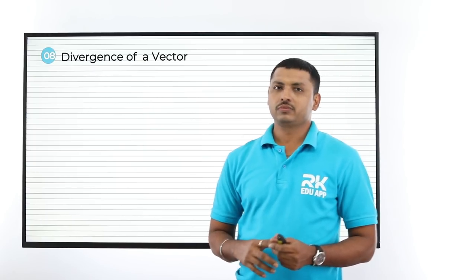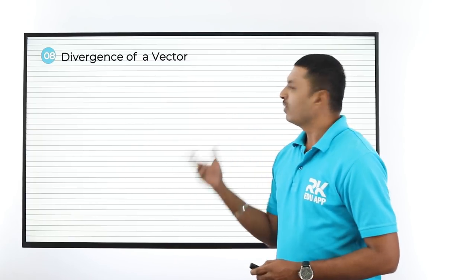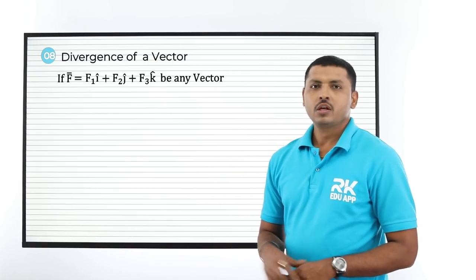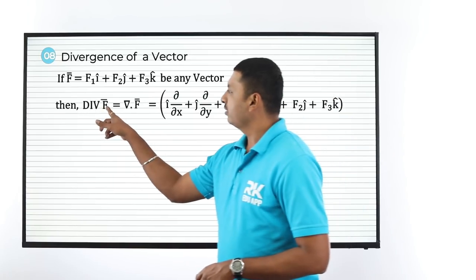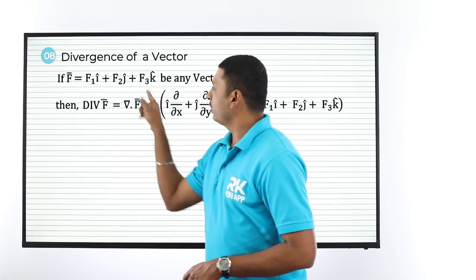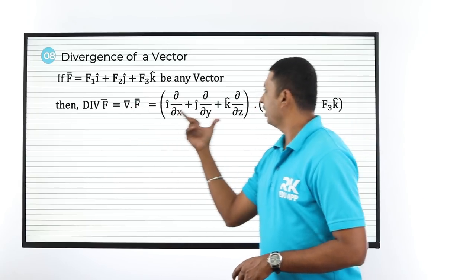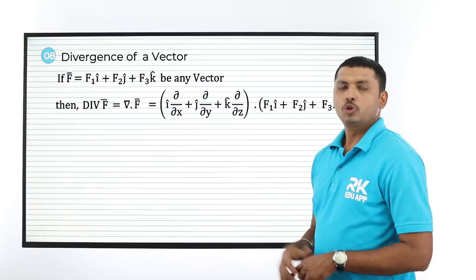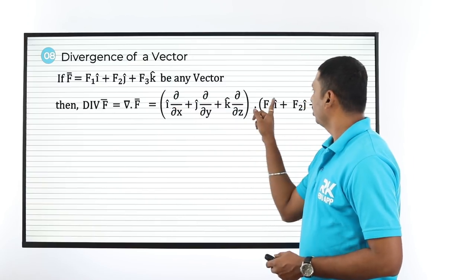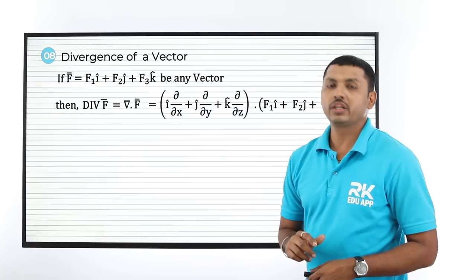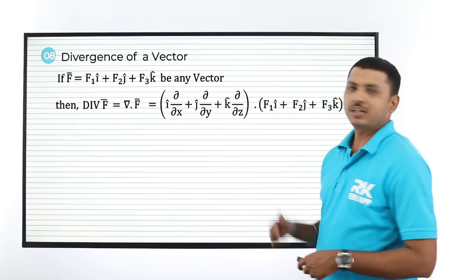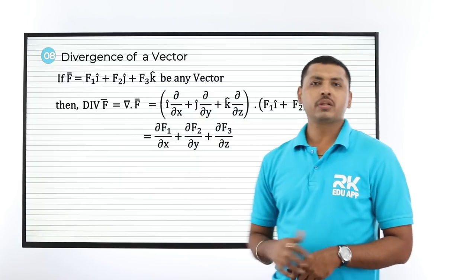Next is divergence. Until now the journey was related to scalars; now it is related to vectors. Suppose a vector F̄ = F₁i + F₂j + F₃k. Then its divergence is written as div F̄ or del · F̄. Note that divergence uses a dot. Taking the dot product, the formula becomes: del F₁/del x + del F₂/del y + del F₃/del z. This is the formula for divergence.